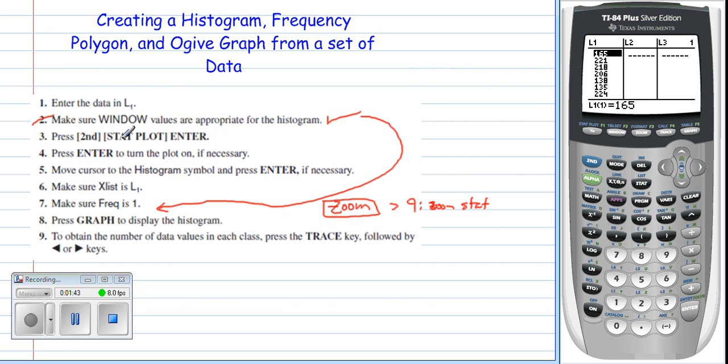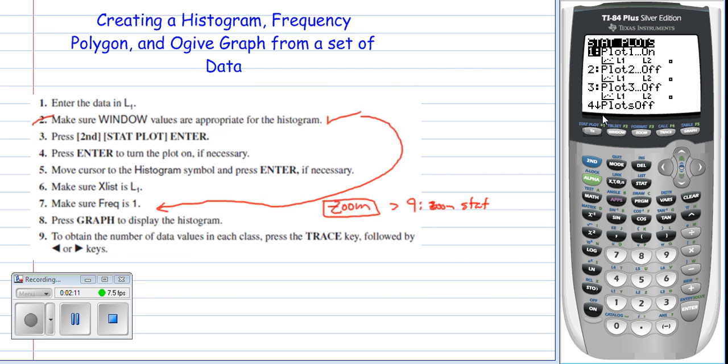Number three says press second, stat plot, and enter. So we're going to press second. That gives us that up arrow in the top right-hand corner. That means now we're looking to be able to hit any of the words written in blue here. Stat plot is located right here, the top left-hand corner of the keyboard, on the Y equals button. By pressing enter, we're actually going to choose stat plot number one.